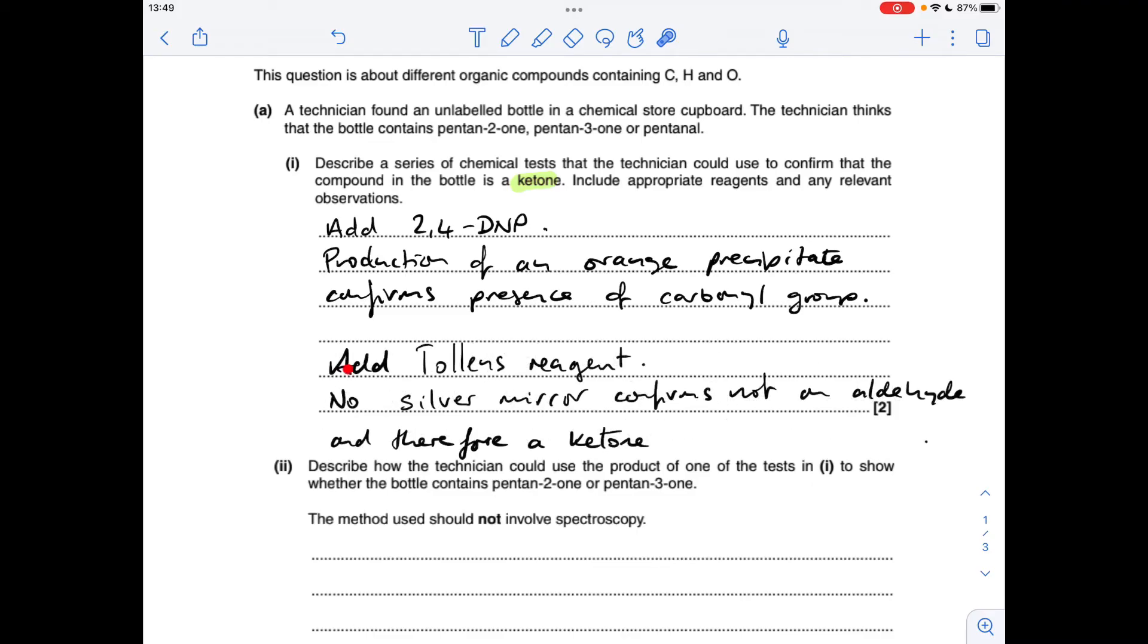Alternatively, you could add Tollens reagent, or you could say ammoniacal silver nitrate there. And again, if it's an aldehyde it would give a silver mirror, so you want it to not give a silver mirror to confirm it's not an aldehyde and therefore a ketone.